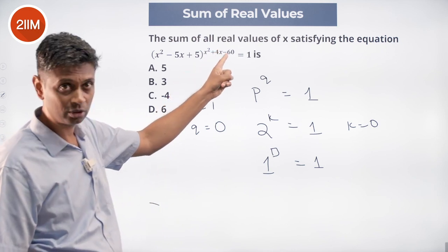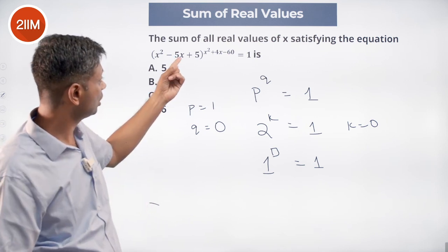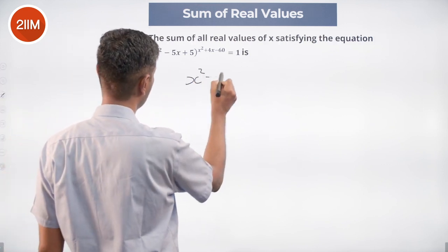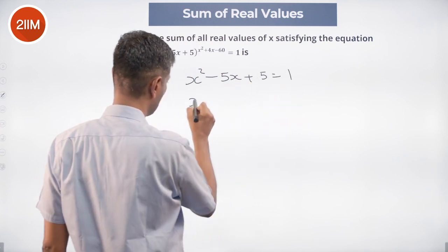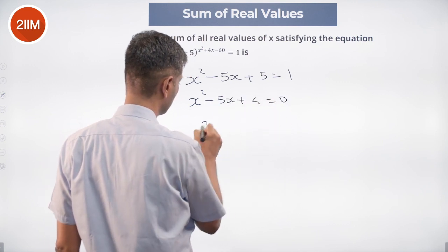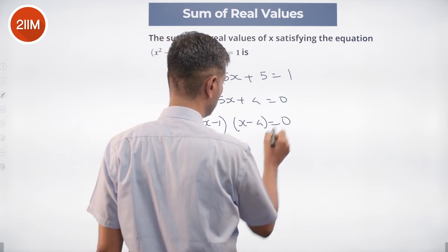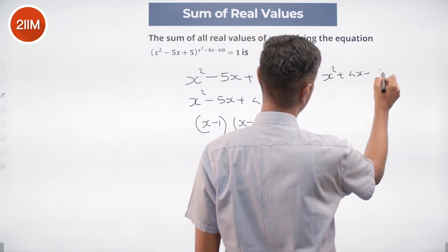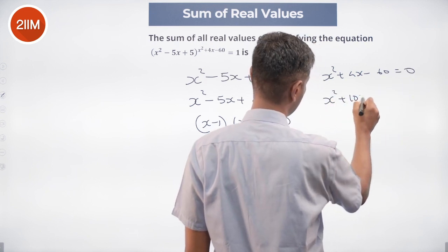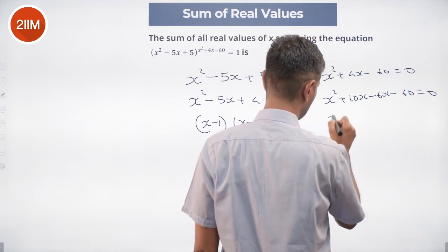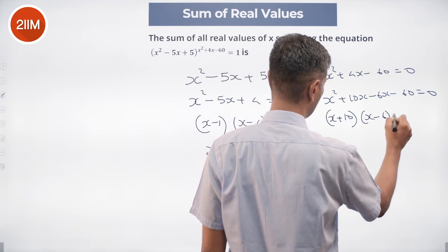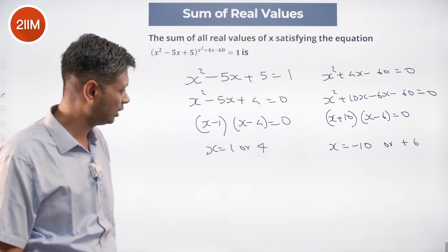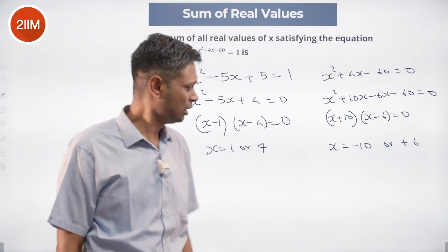So shooting whatever value of x we get for this to go to 0, plugging it here, seeing if it makes sense. Whatever value for x for this to go to 1, plugging it there, seeing it makes sense. Let's solve these two quadratic expressions. We are solving for x² - 5x + 5 = 1, or x² - 5x + 4 = 0. (x - 1)(x - 4) = 0. x² + 10x - 6x - 60 = 0. (x + 10)(x - 6) = 0. We still have to be a little careful and check values. Minus 10 and plus 6.